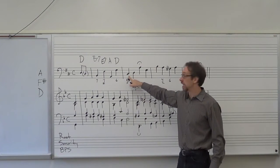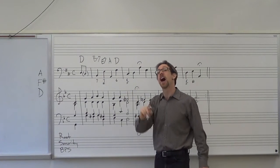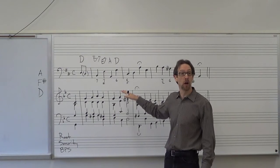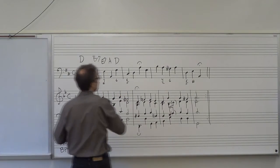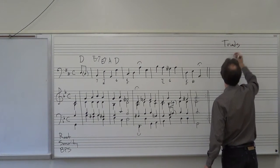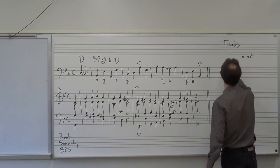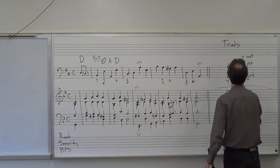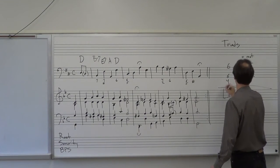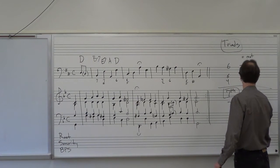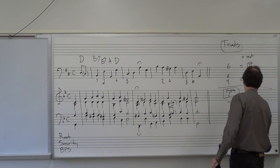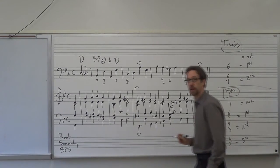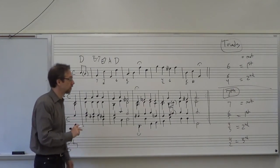Coming up next, I have a C sharp in the bass with 6, 5 written underneath it. Let me review quickly. For triads: nothing means root position; 6 means first inversion; 6-4 means second inversion. For 7th chords — worth memorizing — a 7 alone is root position; 6-5 is first inversion; 4-3 is second inversion; and 4-2 is third inversion.